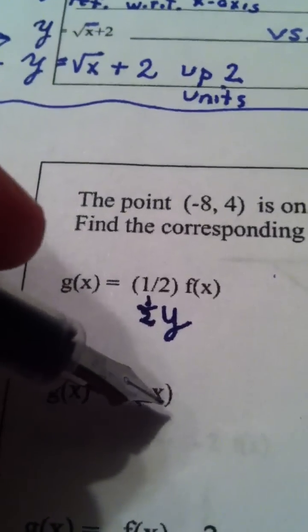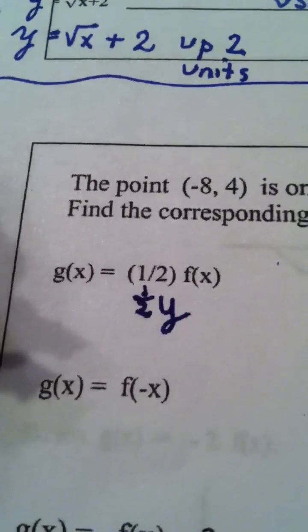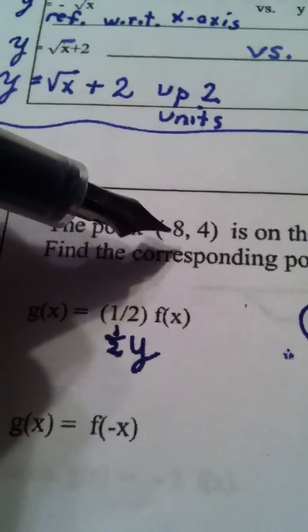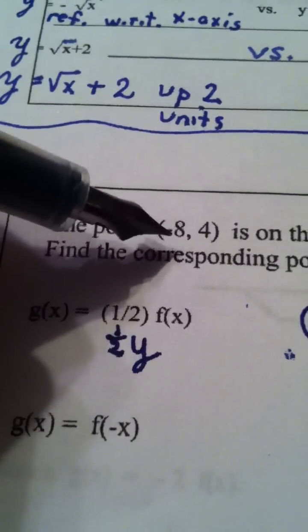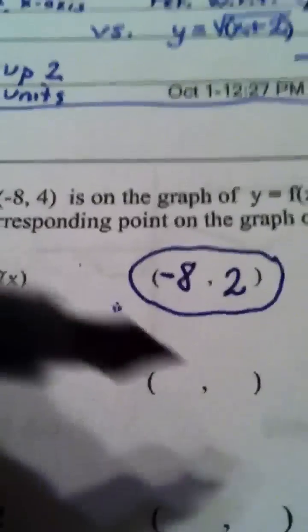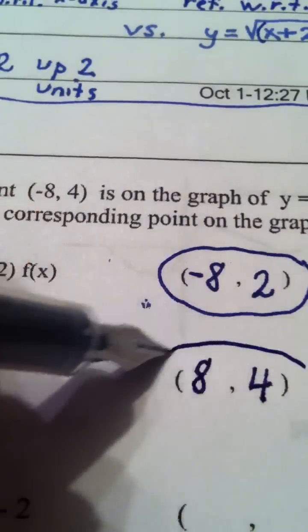We took the original x value and took the opposite of it. We made no change at all in the y value. So, if I come up here and I take the opposite of the x value, that would become a positive 8. No change in the y value would be a positive 4.